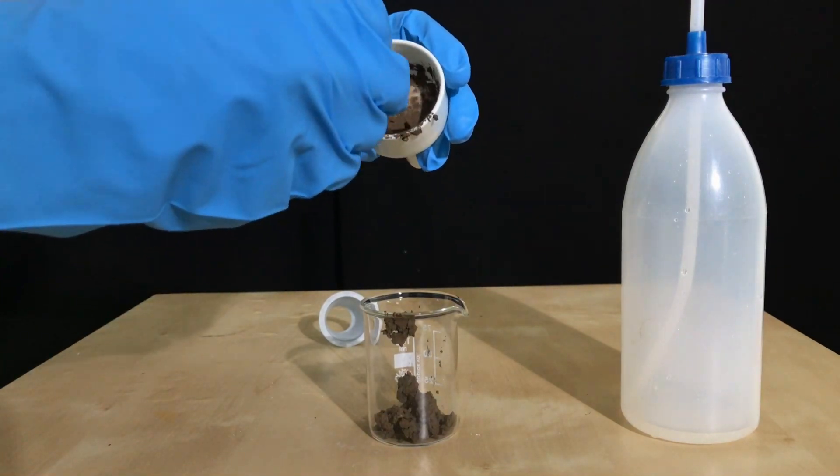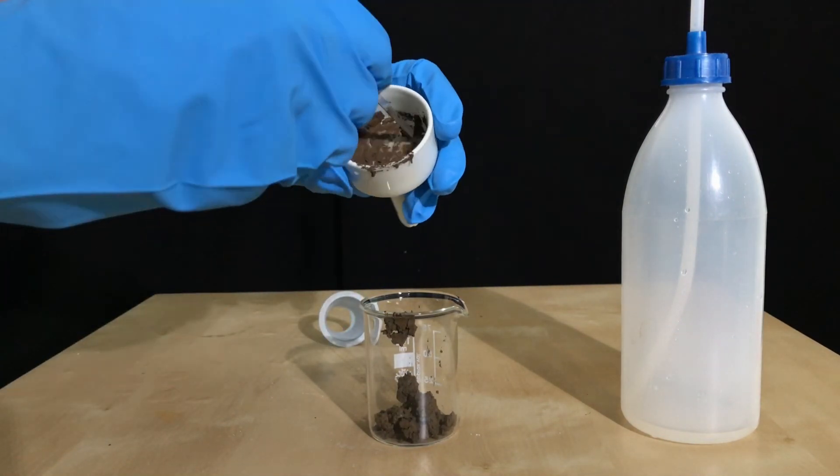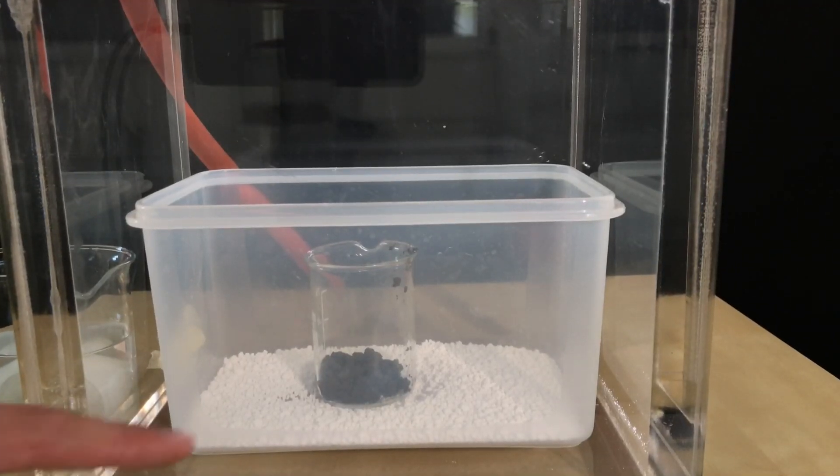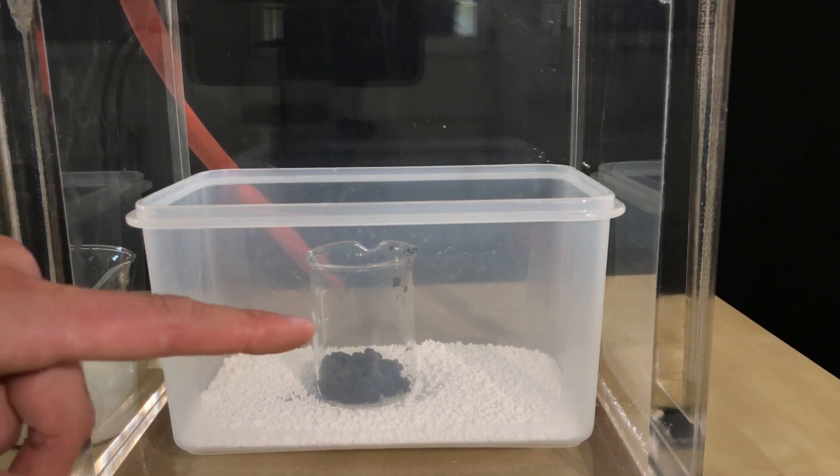As silver oxide will decompose at about 130 degrees Celsius, it is not recommended to dry it on a hot plate, because it would simply decompose to form oxygen and silver. Other ways to dry it have to be employed.